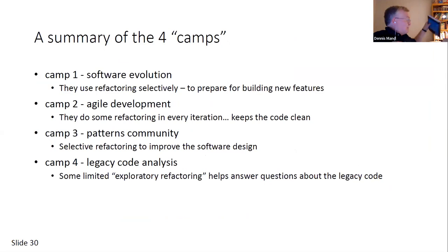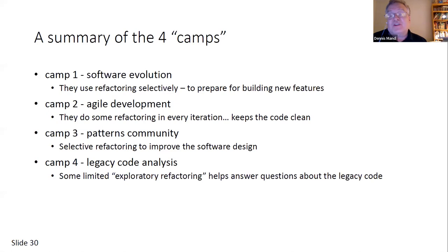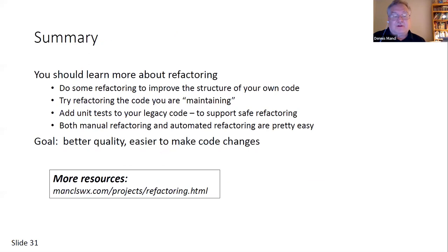Summary of the four camps: software evolution — refactoring selectively; agile development — a little refactoring in each iteration; patterns community — restructuring the design, so it's directed refactoring; legacy code analysis — exploratory refactoring.